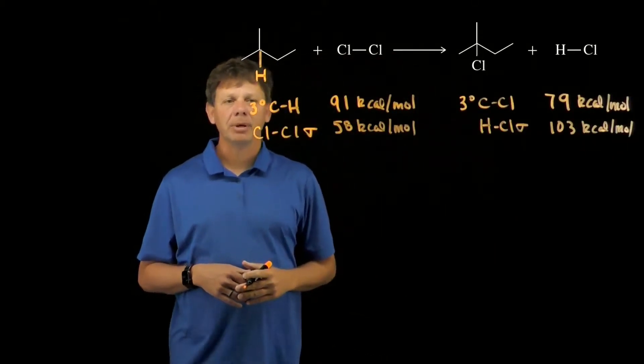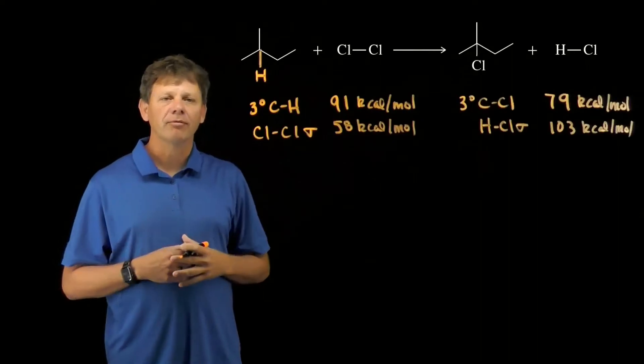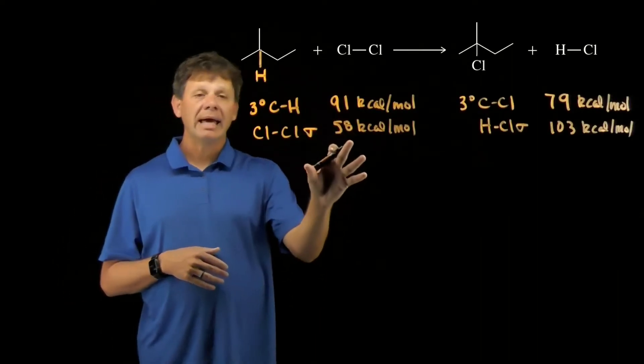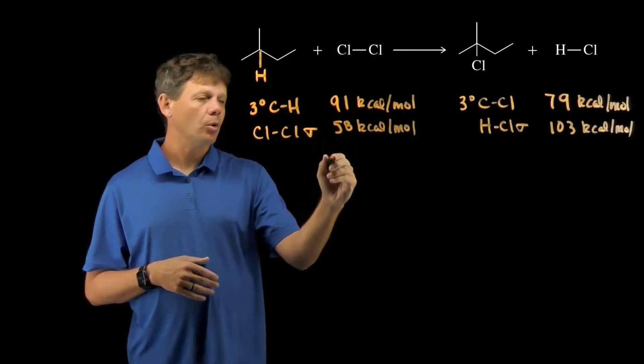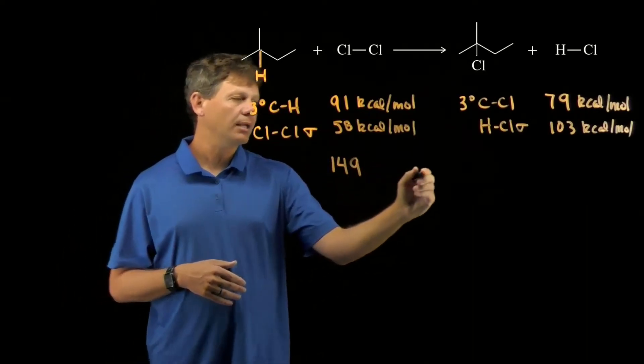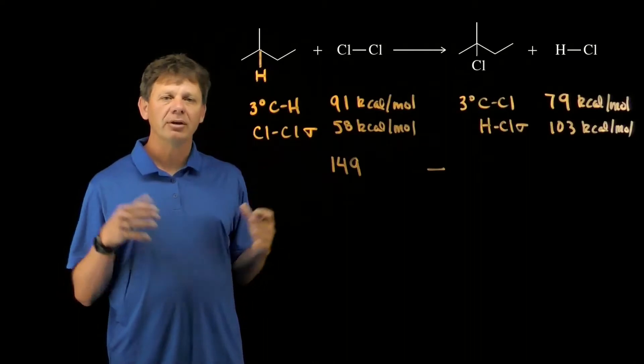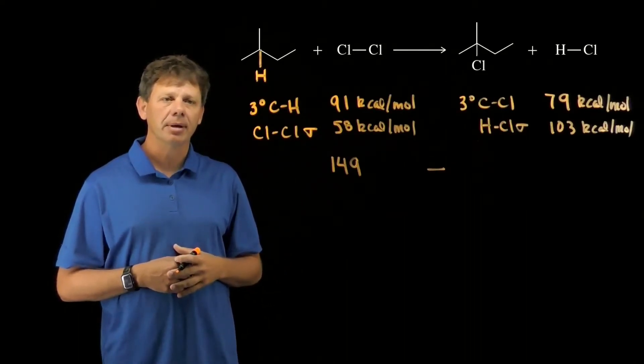That amount of energy is how much energy we get out from forming the bonds. When we add these up, 91 plus 58 gives us a total of 149 kilocalories per mole of energy we put into the system to break the bonds.